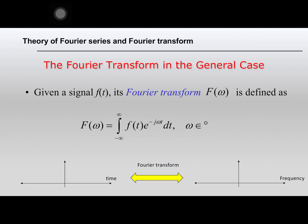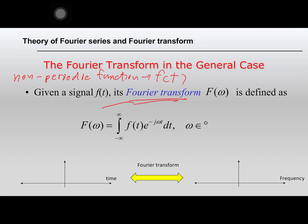But if you have a non-periodic function, you can find the Fourier transform of f(t) by an integral of f(t) multiplied by e to the power of minus j·ω·t, dt. This is the Fourier transform, written as F(ω). So you have the signal in the time domain, f(t), and if you do the Fourier transform, you will get F(ω) in the frequency domain.